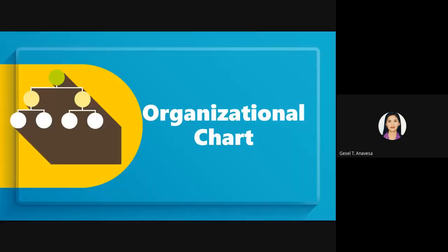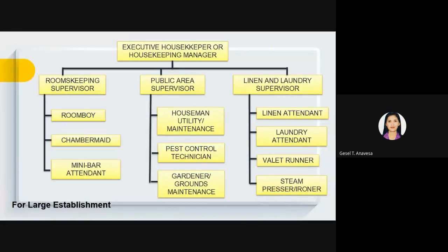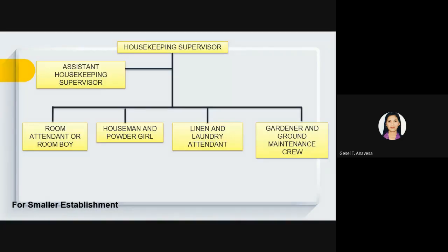This is an example of the organizational chart for a large establishment, headed by the executive housekeeper. For a smaller establishment, it is headed by the housekeeping supervisor, assisted by an assistant housekeeping supervisor. In case the housekeeping supervisor is not around, the assistant housekeeping supervisor will supervise the other employees.